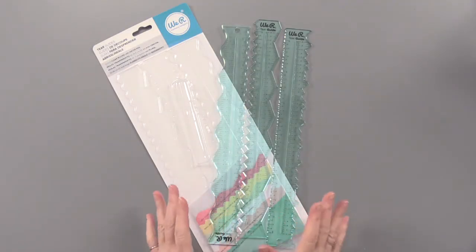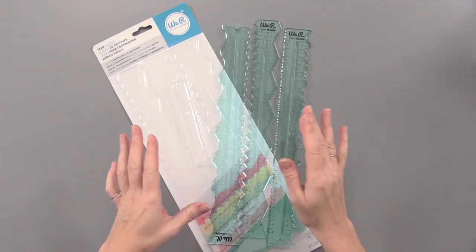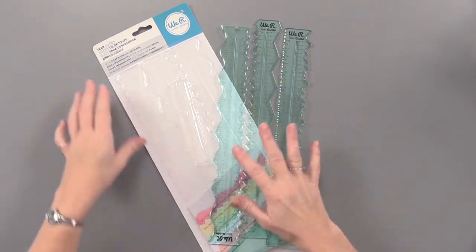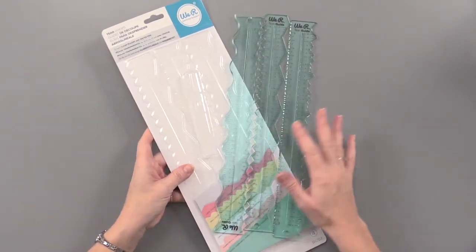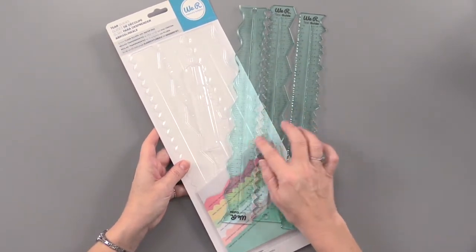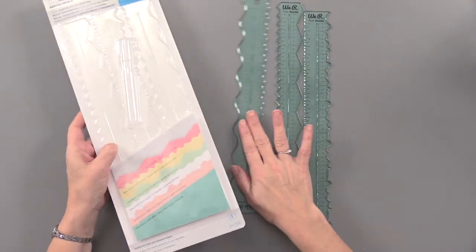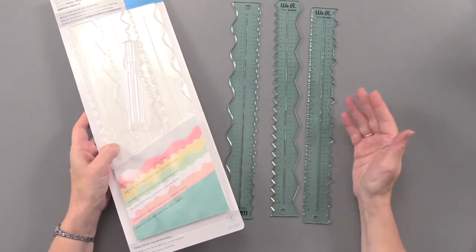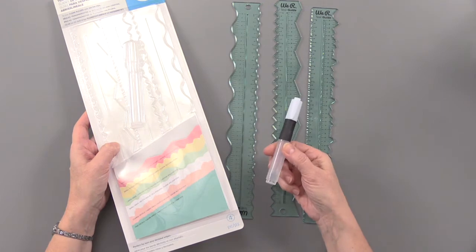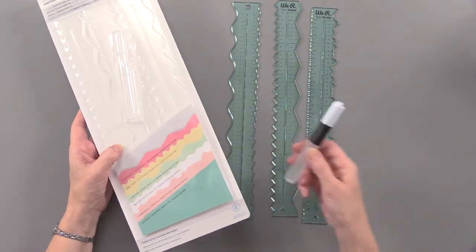These tear guides make it easy to create decorative edging on your papers. They're from We Are Memory Keepers and include six different tearing edges on three guides, plus a refillable water pen to create fun effects on your project edges.